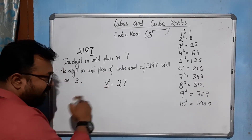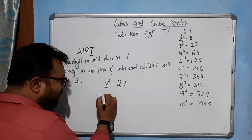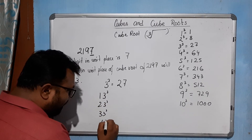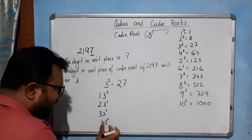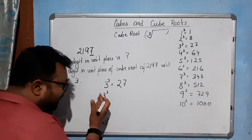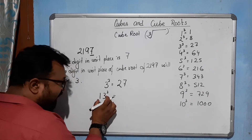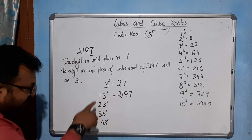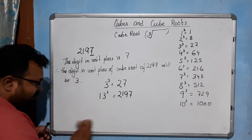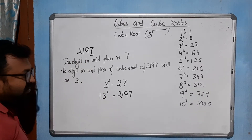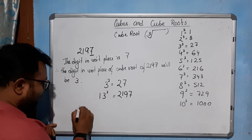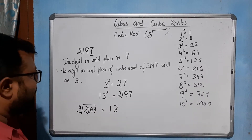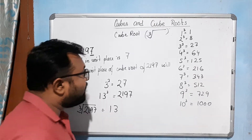So 3 must be in the unit place. Let's check 13³: if we check 13 cubed we get the result 2197. So in the first instance we are getting the cube root of 2197 is 13. That is, the cube root of 2197 is 13. This is one method.